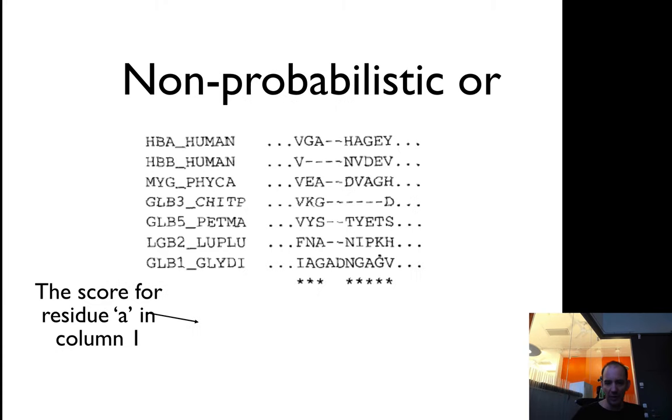So you want to check out what the score for aligning A in column one. In column one here, you have five V's and one F, one I. You want to align A to that one. That's very simple. It's just the score of five sevenths of having a V aligned to A and one seventh to have a phenylalanine and one seventh to have an isoleucine.